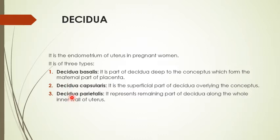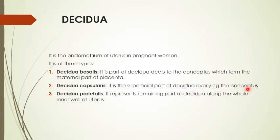Decidua parietalis represents the remaining part of the decidua along the whole inner wall of the uterus. There is a third variety called decidua capsularis, which is the proliferation of the endometrium around the fetus, covering it like a capsule. This is the superficial part of the decidua overlying the conceptus.